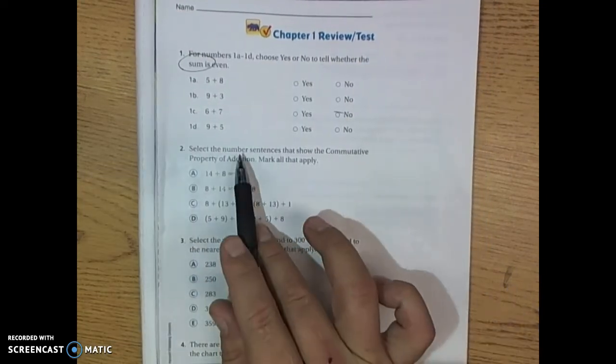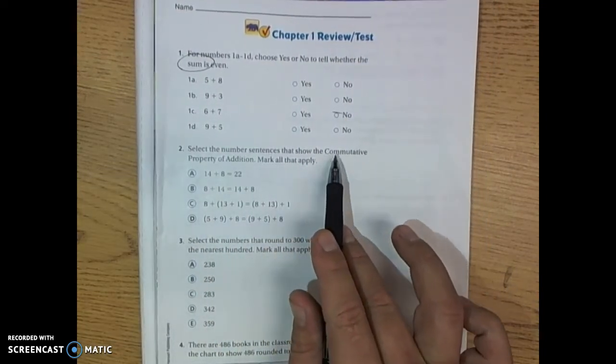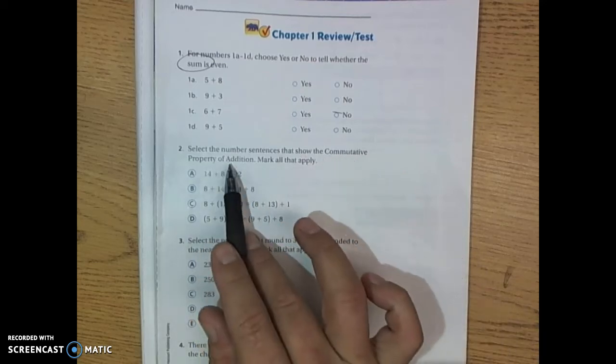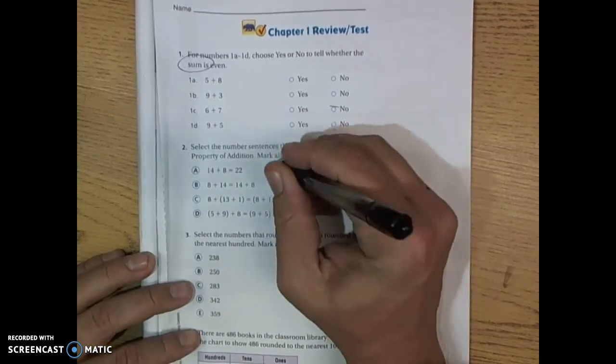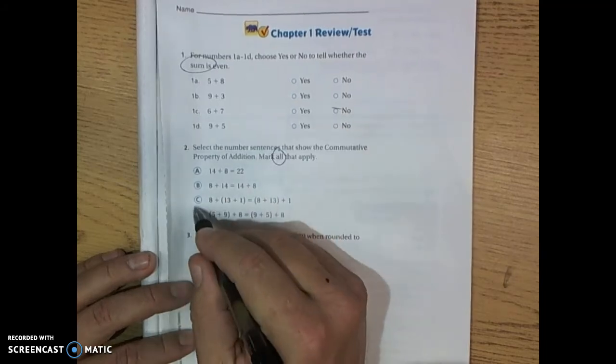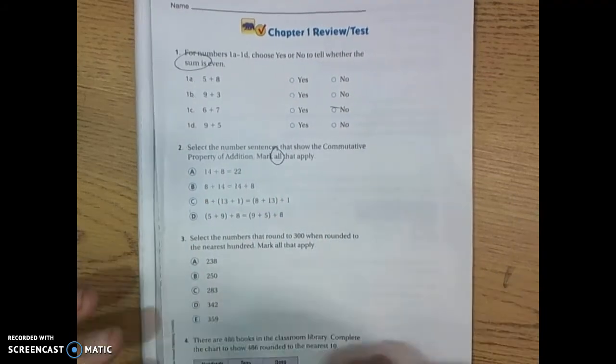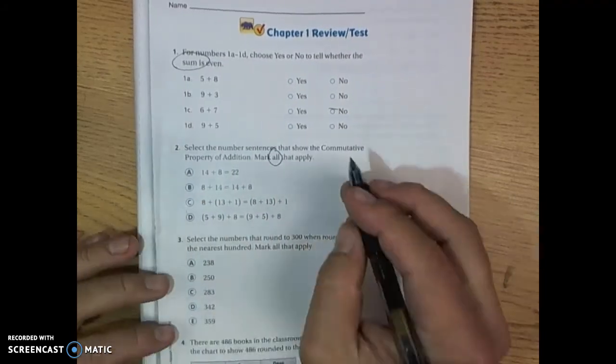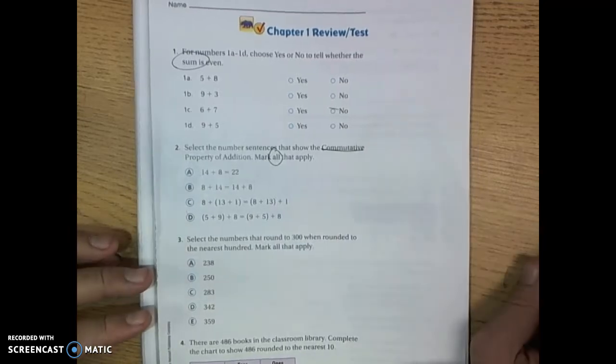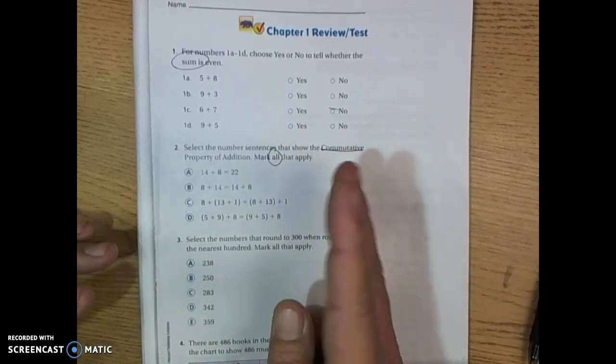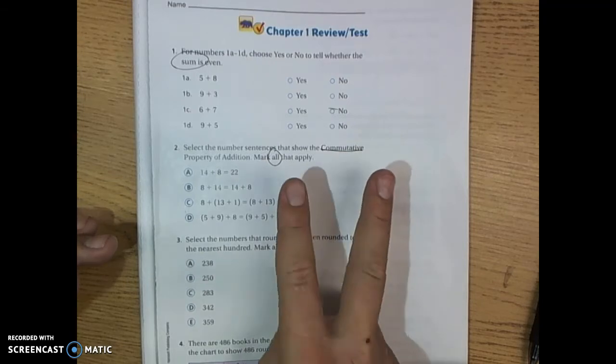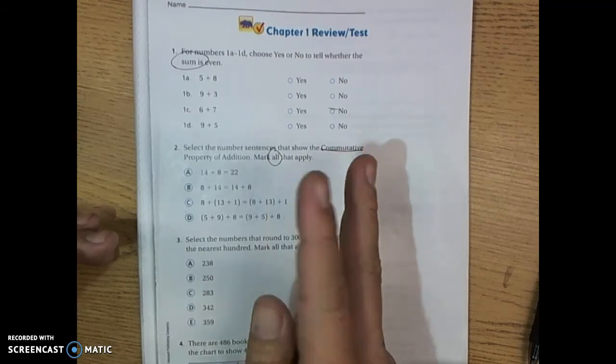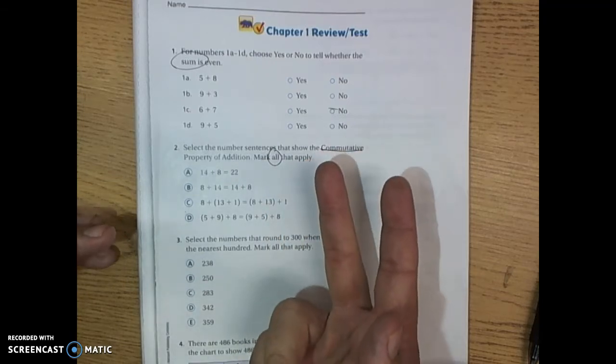For number 2, it says select the number sentences that show the commutative property of addition. Look closely, mark all that apply. So you're going to bubble in any one of these letters that shows the commutative property. What we talked about in class, the commutative property is where you can switch the numbers in an addition problem and the sum will remain the same.